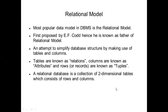The relational model is basically an attempt to simplify the database structure by making use of tables and columns. As every student knows, a table is a collection of rows and columns — it is a simple structure. Mr. Edgar Codd gave the simplification of database just by using rows and columns. In the relational model, tables are called relations, columns are known as attributes, and rows or records are known as tuples.